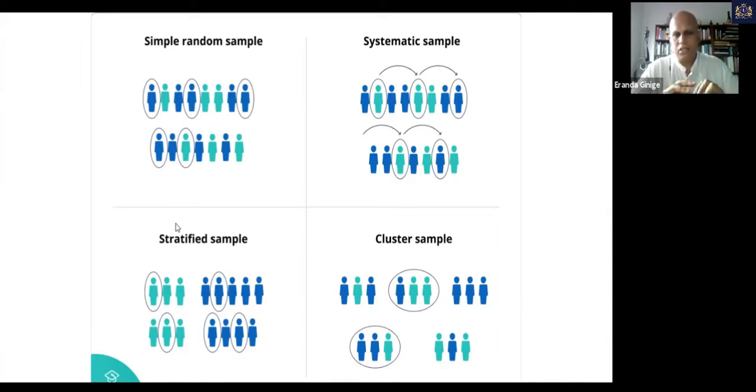Stratified sampling is you stratify or separate people based on some characteristics. You might divide the database into men and women, male, female, or you might use another variable like income levels or age. You say 20 to 30, one strata, 31 to 40, another strata, and so on. And then what you'll do is you will pick random people from each of these groups.